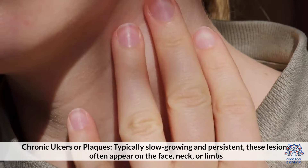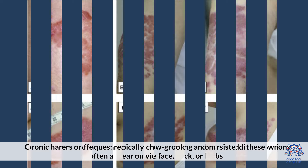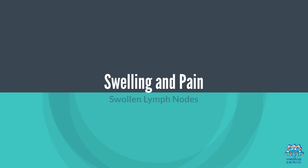Symptoms of Skin Tuberculosis. Lesions: chronic ulcers or plaques, typically slow-growing and persistent. These lesions often appear on the face, neck, or limbs. Color changes: affected areas may change color, becoming reddish-brown or violet.